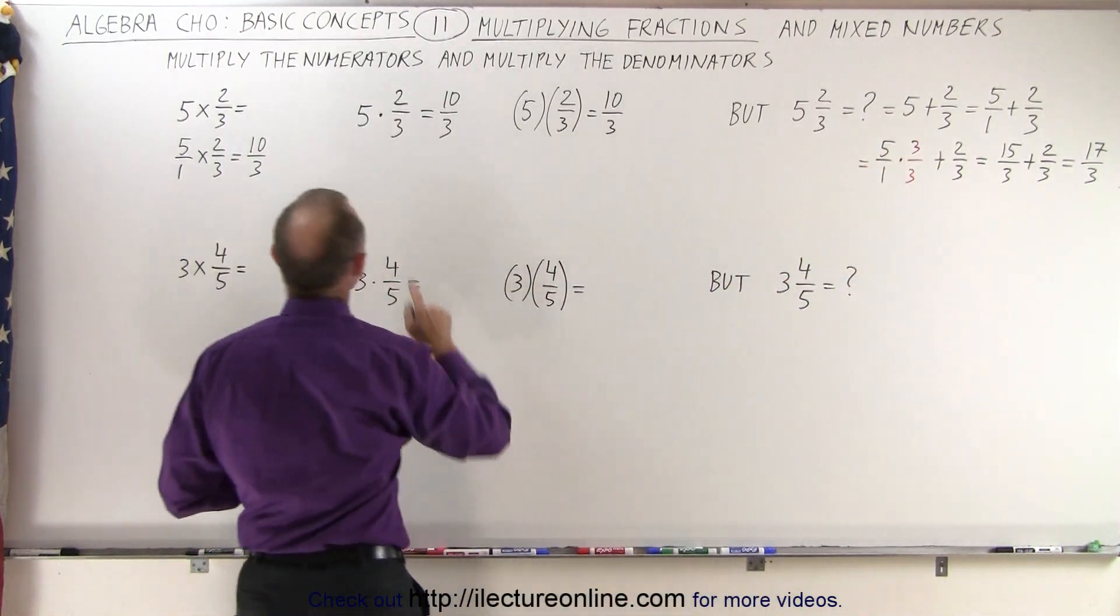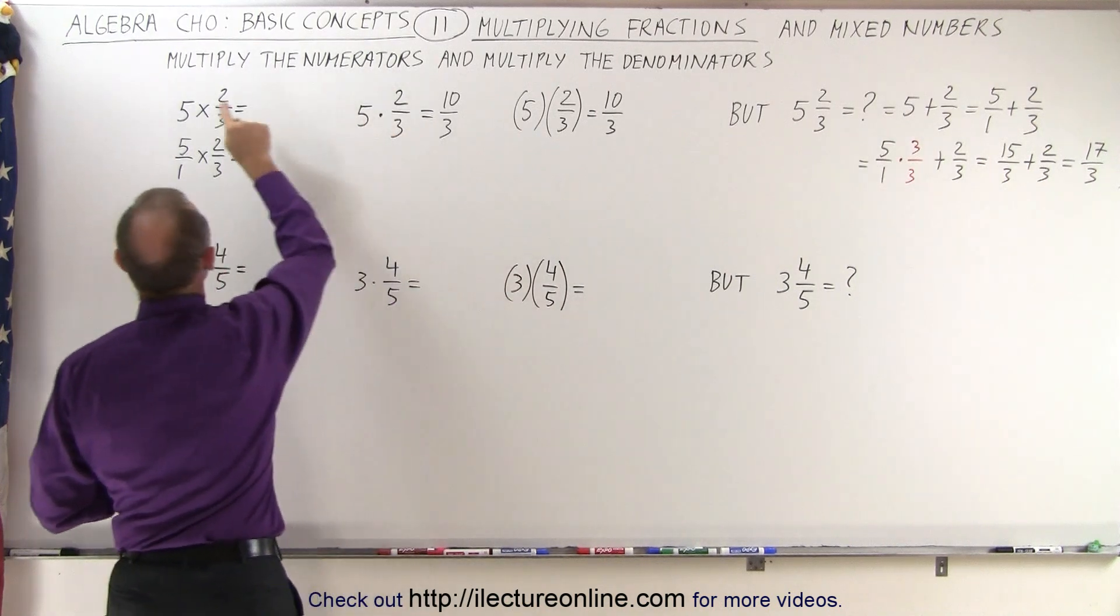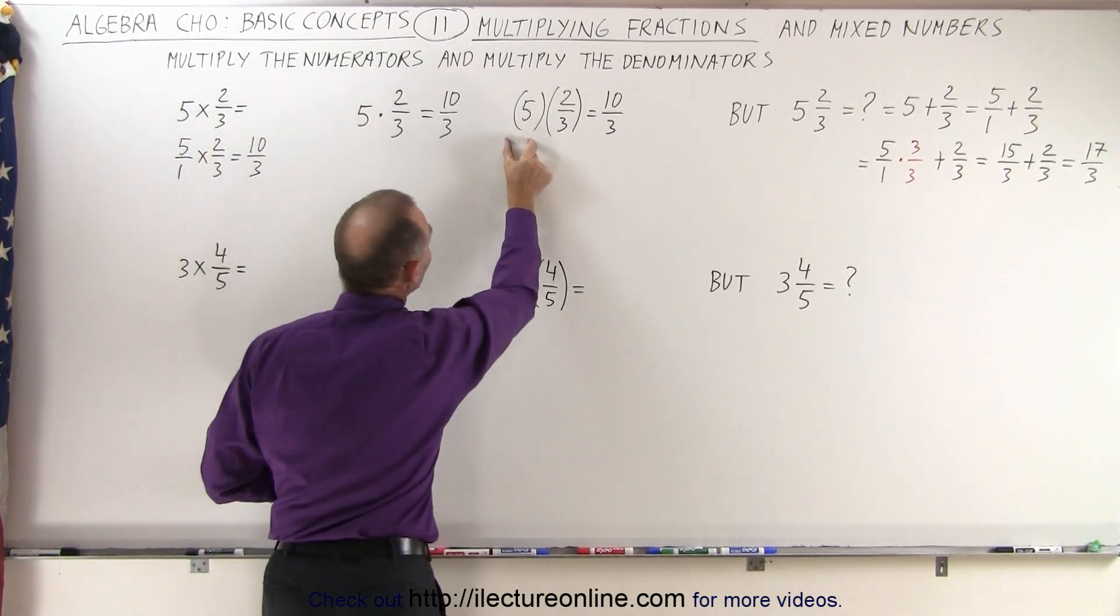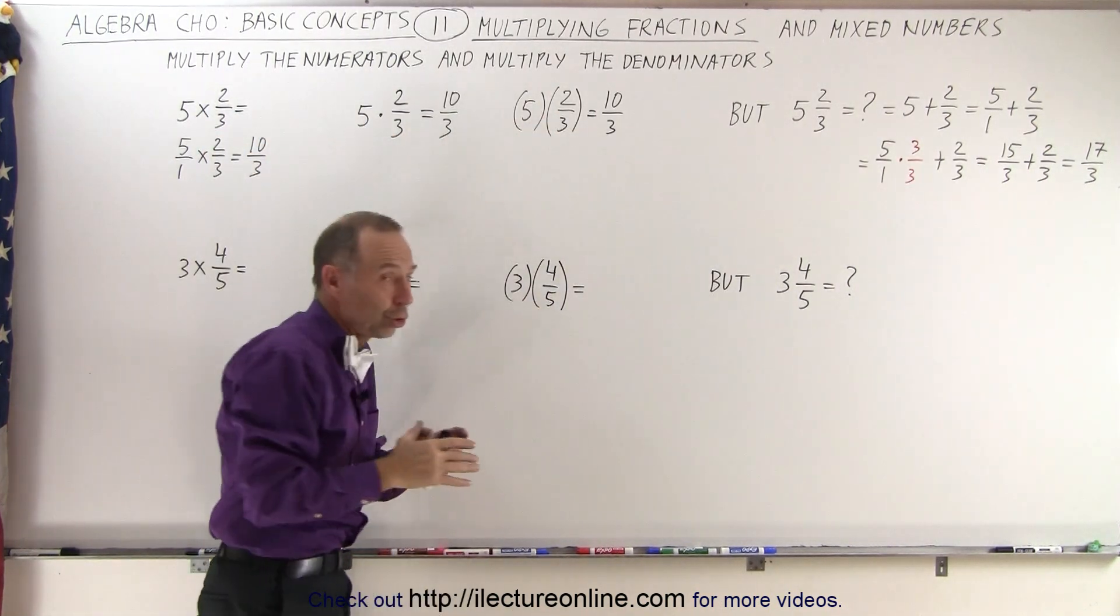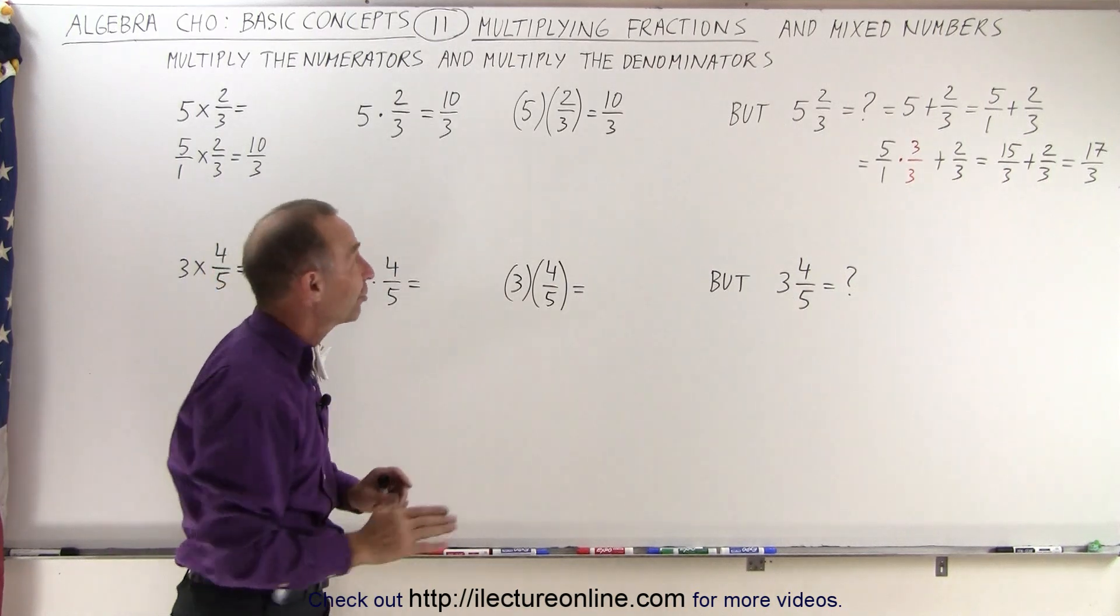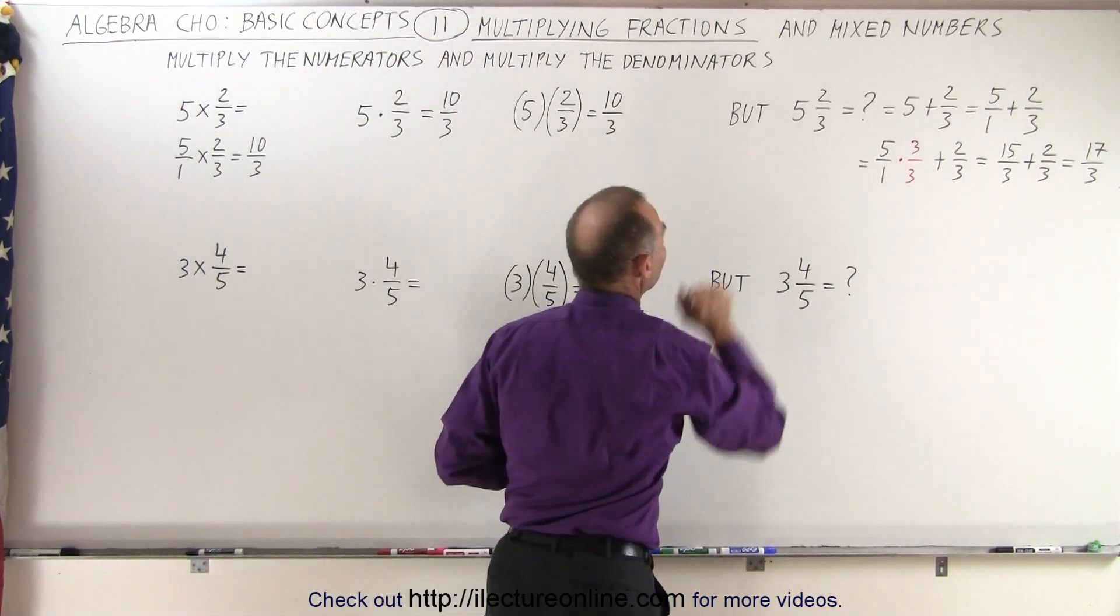If we want to show that we're multiplying, we put either a dot, we put a multiplication sign, or we put parentheses around it. With nothing in between, you could put a dot in between but you don't have to. Dot means multiplying, this means adding.